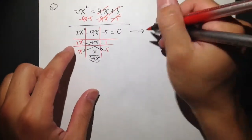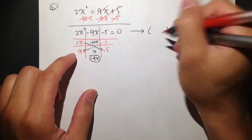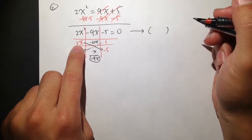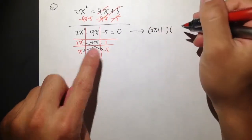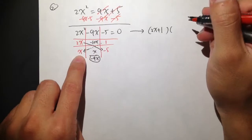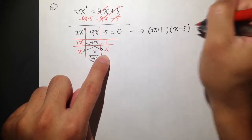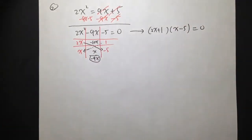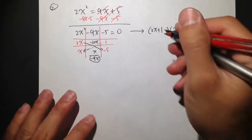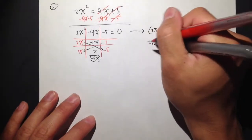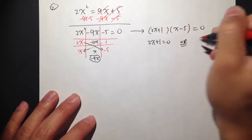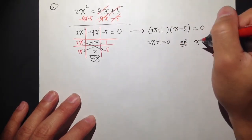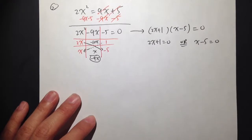To factor this out, the first parenthesis is 2x plus 1, and the second parenthesis is x minus 5, equals to zero. You set the first parenthesis, 2x plus 1, equal to zero, or the second parenthesis, x minus 5, equal to zero.